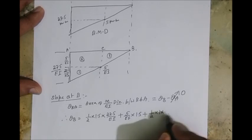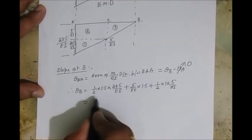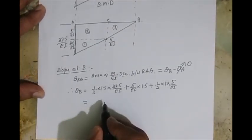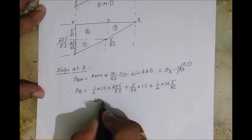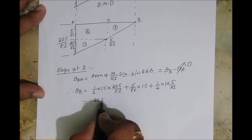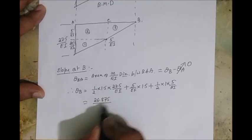So then what is the slope theta B? You add everything. So solve this part, so you will get it 26.875 by EI.